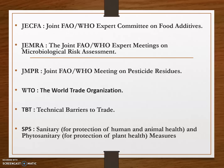Next is JMPR, the Joint FAO/WHO Meeting on Pesticide Residues. It is an international scientific expert group administered jointly by FAO and WHO. It was formed in 1963. It reviews residues and analytical aspects of pesticides, estimates maximum residue levels, reviews toxicological data, and estimates acceptable daily intakes for humans of the pesticides under consideration.